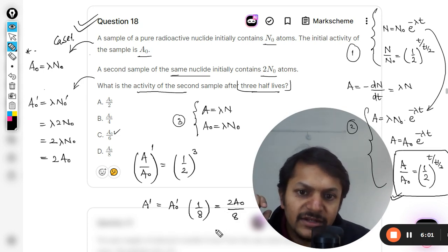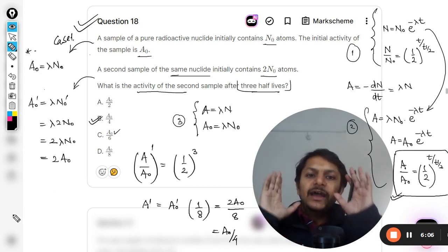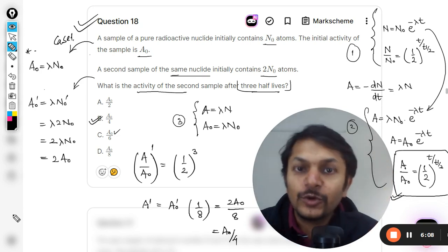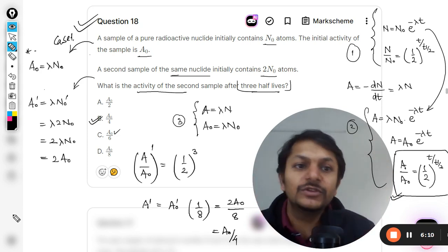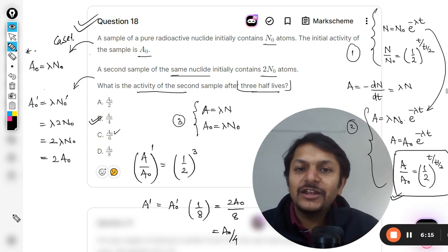Divided by 8, so you get the answer A₀ divided by 4. And hence the answer for this question is B. This is how we do this question, my students.